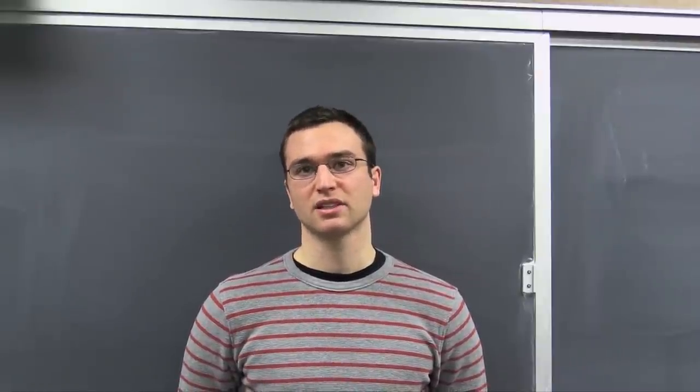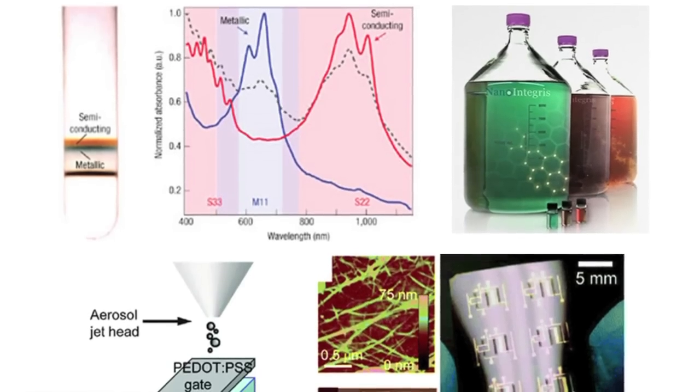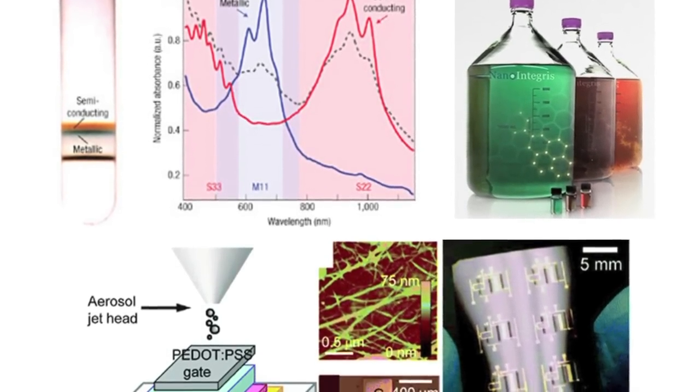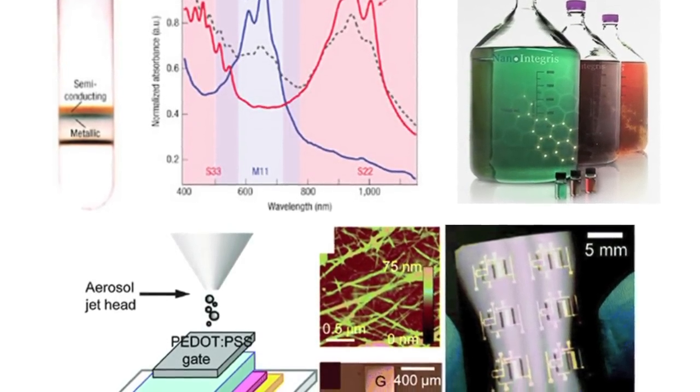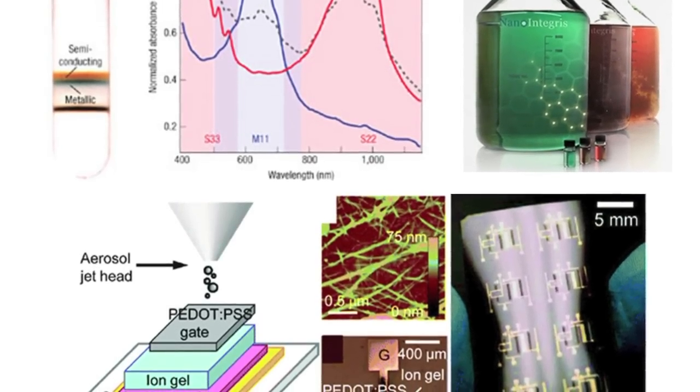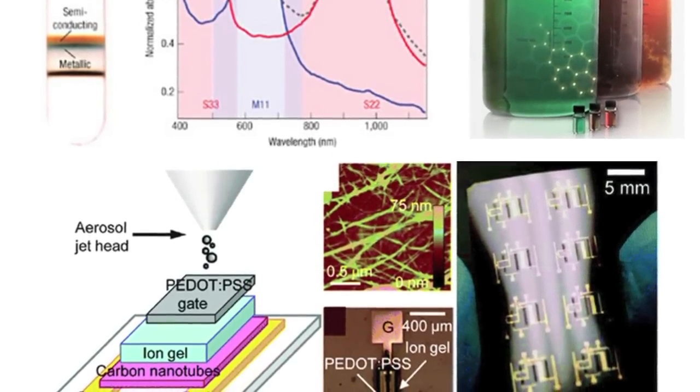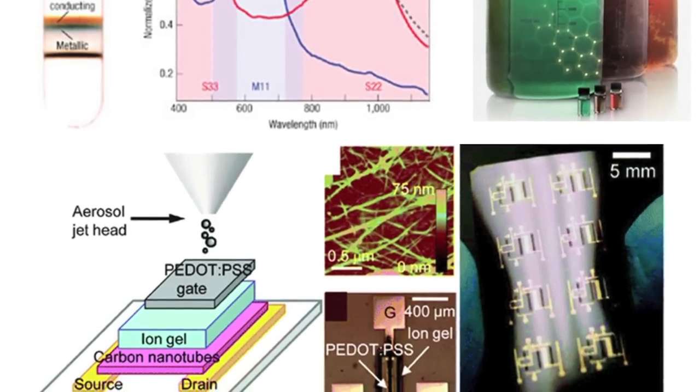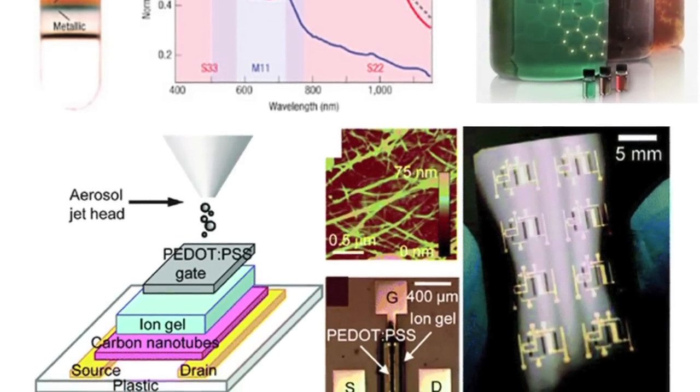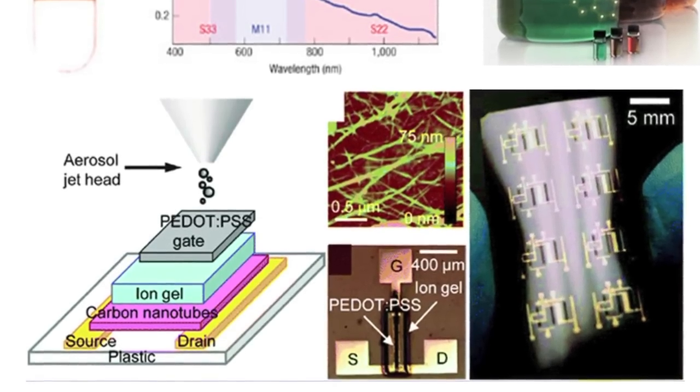This lab has developed an effective and scalable method to isolate semiconducting single-walled carbon nanotubes, known as density gradient ultracentrifugation. Using this method, printable carbon nanotube inks have been applied as the channel material in thin film transistors, a fundamental building block of more complex circuits. The performance of these carbon nanotubes exceeds that of conventional organic semiconductors, making this a promising area of ongoing research in labs around the world.